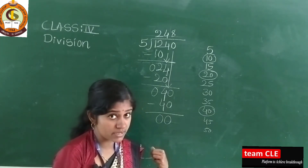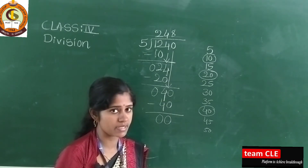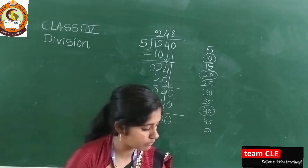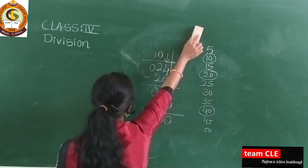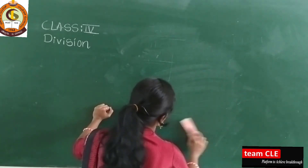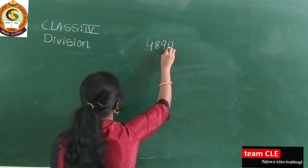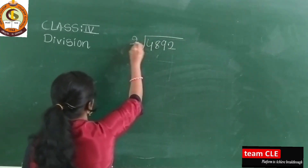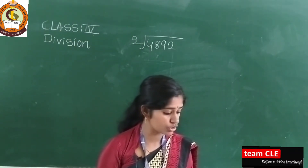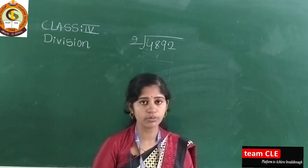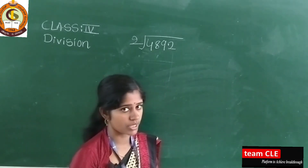If you practice these examples, then only you will be able to solve problems with a two-digit divisor. Let us take one more example: 4892 divided by 2. Dear students, here you have one more concept — divide to find the quotient and remainder, and also verify your answer. After dividing, you need to check whether your answer is correct or not.